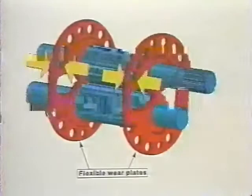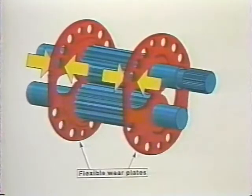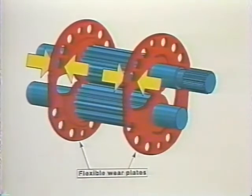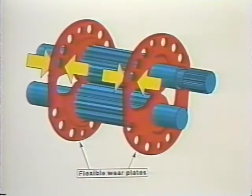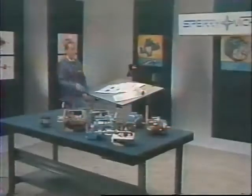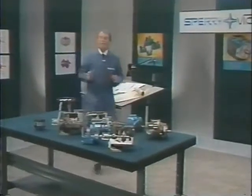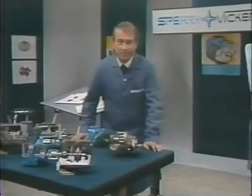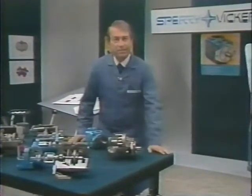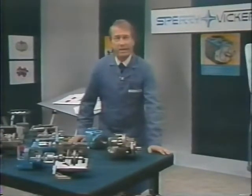Gear pumps today are highly efficient units, capable of operating at pressures of up to 3,000 PSI and speeds in excess of 2,000 RPM. This performance is at least partially the result of the addition of bronze-faced flexible wear plates, which are pressure-loaded against the side faces of the gears, reducing clearance to a minimum. Passages in the wear plates also permit oil under pressure to extend farther around each gear to reduce the unbalanced hydraulic loading. Sperry Vickers gear pumps range in size from 7 to 50 gallons per minute at 1,200 RPM, available in both single and double units. Other manufacturers have gear pumps rated as high as 100 gallons per minute.